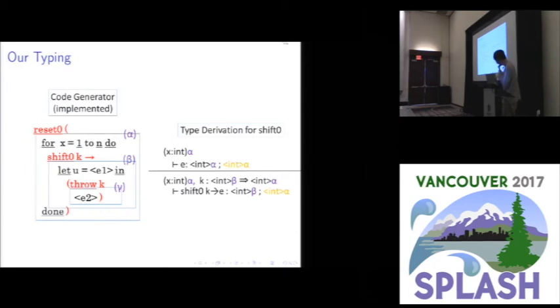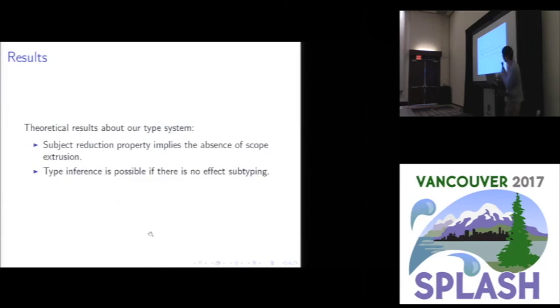So this is one example of typing rules. By using this kind of typing rule, we successfully encoded safety conditions in terms of types. And our result can be summarized just by two lines. We can prove subject reduction. And also type inference is not possible for the full calculus. But if we restrict our calculus slightly by restricting no effect subtyping, then type inference is possible. So this is our design.